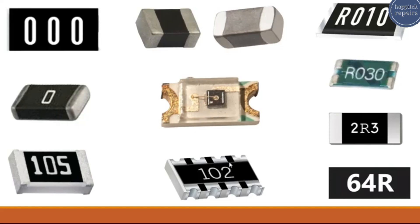This is a network resistor. A network resistor is a combination of many resistors — this is the first, this is the second, and this is the third. Its value is 1000 ohms or one kilo-ohm, because we have the first digit, the second digit, and the third digit represents the number of zeros.